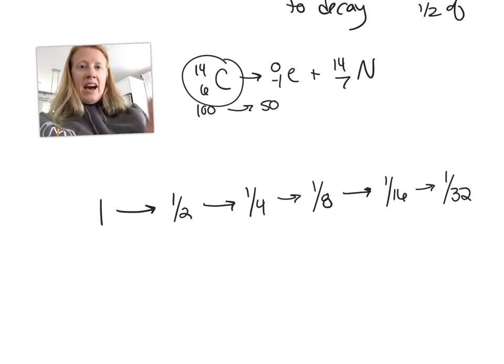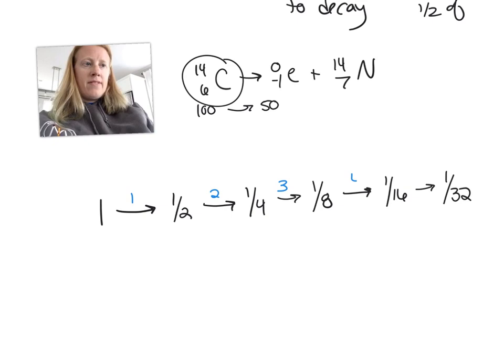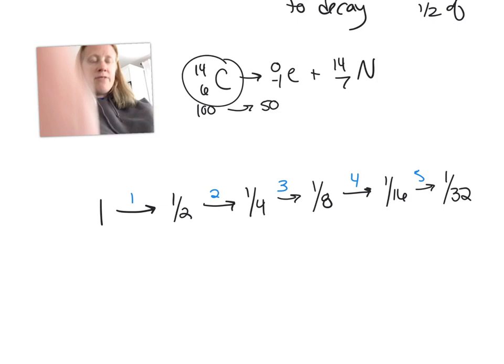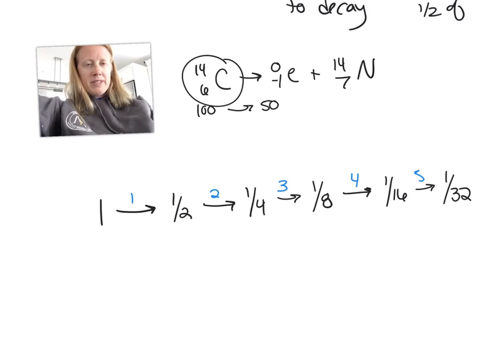So if I wanted to know how many half-lives it would take for something to become one-thirty-second of what it originally was, I would just count the arrows. One, two, three, four, five. So five half-lives is how long it would take for that substance to become one-thirty-second. I would only have one-thirty-second of that substance left. When I say that substance, I mean this stuff, not the products, like the reactants. It hasn't decayed yet.